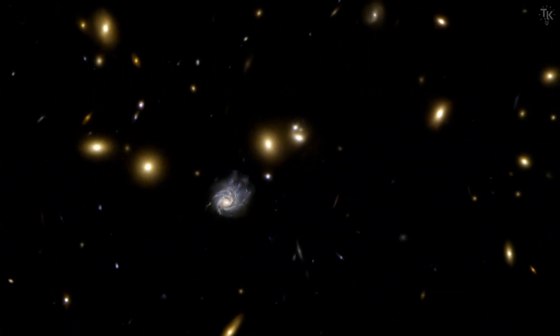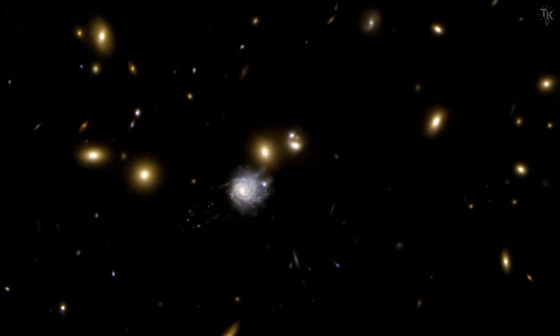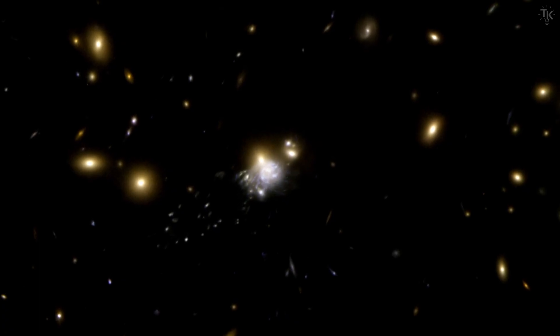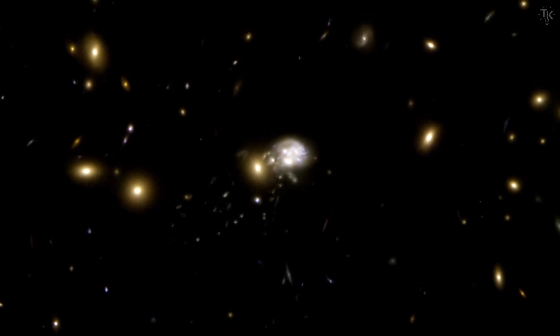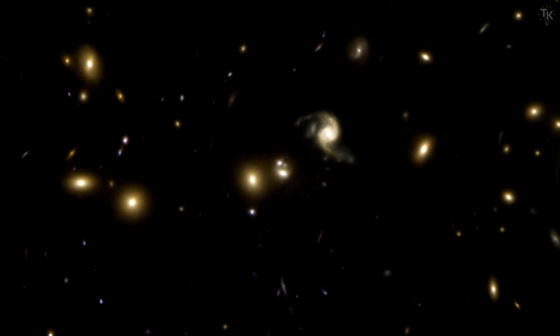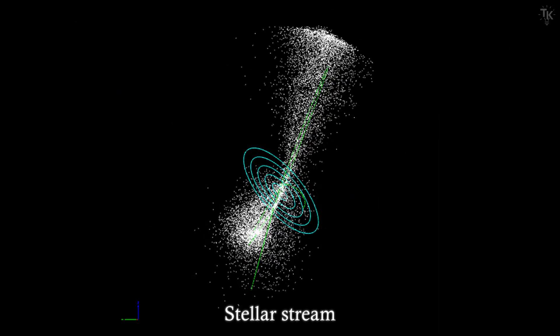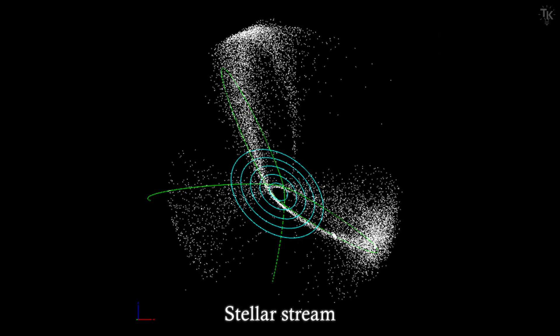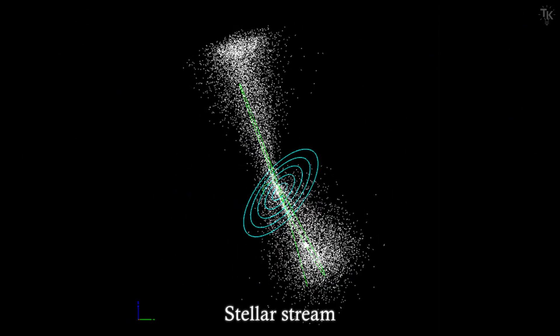Through three encounters, the Sagittarius Dwarf Spheroidal Galaxy was torn apart, leaving behind long, stream-like structures of stars and gas around the Milky Way. These are called stellar streams. Stellar streams are distributed in a way that surrounds the Milky Way.